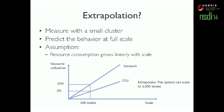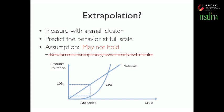For example, with 100 nodes we can observe that the network is 10% utilized and the CPU is 5% utilized, then extrapolate that our system can scale to 1,000 nodes. However, for this approach to work in practice, we have to rely on the assumption that resource consumption grows linearly with the scale of the system, which may not always hold.